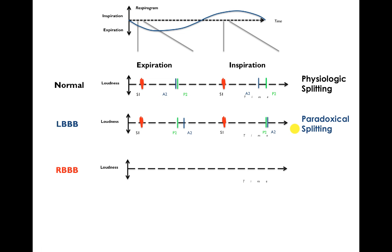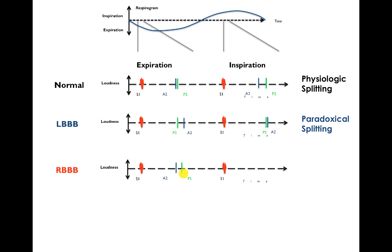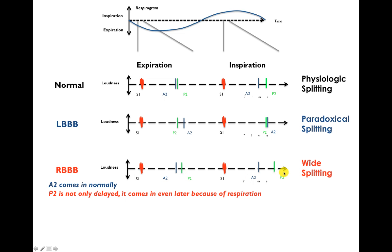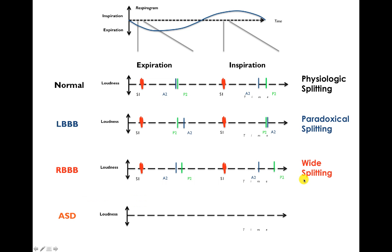With pulmonary stenosis or right bundle branch block — something that delays ejection of blood out of the right ventricle — A2 comes in normally but P2 is delayed because it's the right ventricular ejection that is delayed. You can already hear splitting even at expiration. Then on inspiration, A2 comes in normally because the left side isn't affected, but P2 is already delayed and gets delayed even more by respiration. So you hear splitting at expiration and even wider splitting at inspiration — that's called wide splitting.